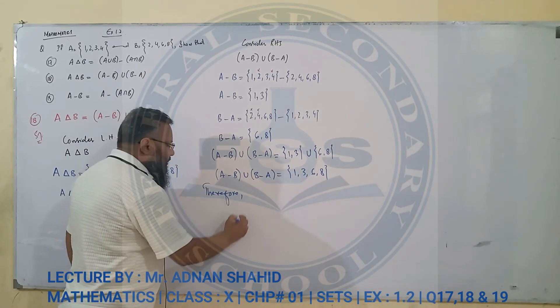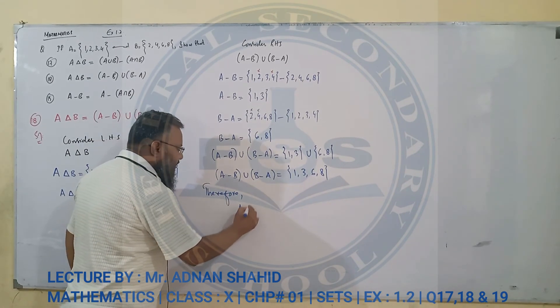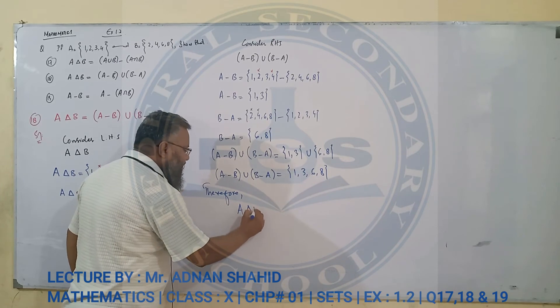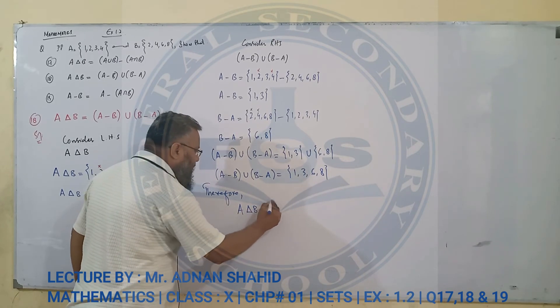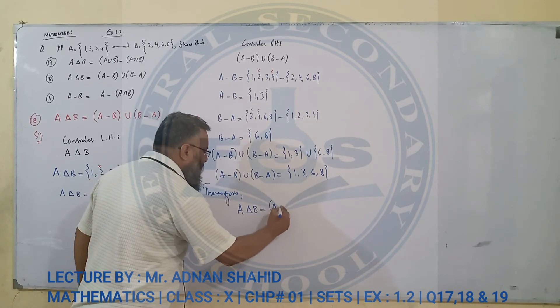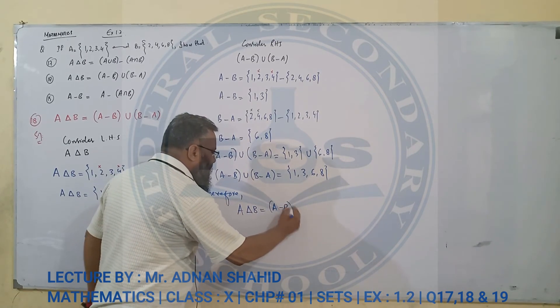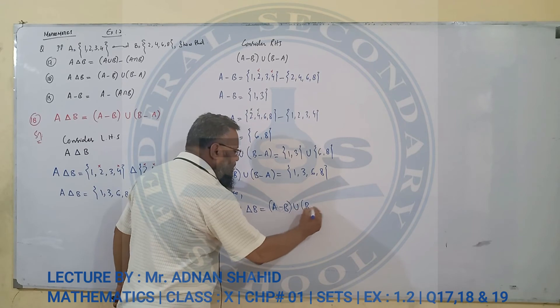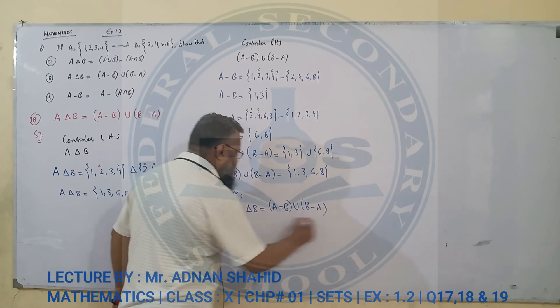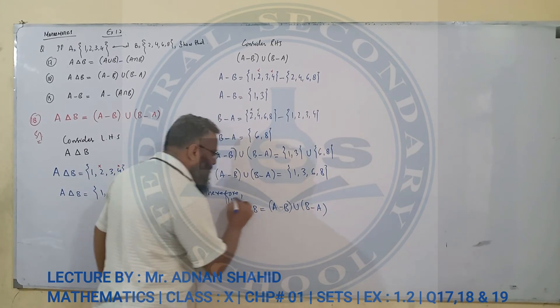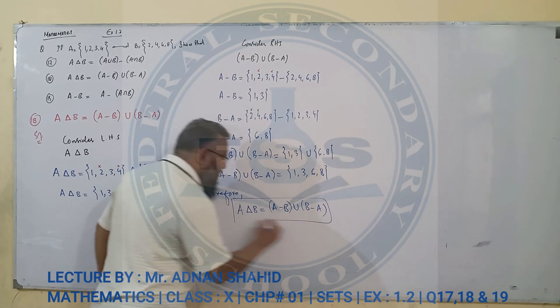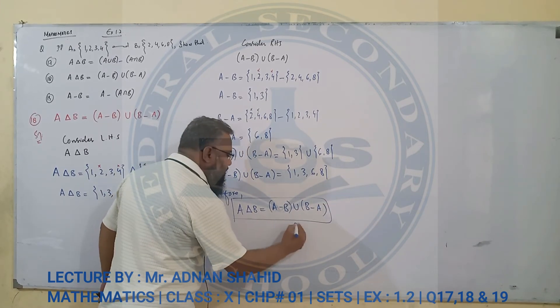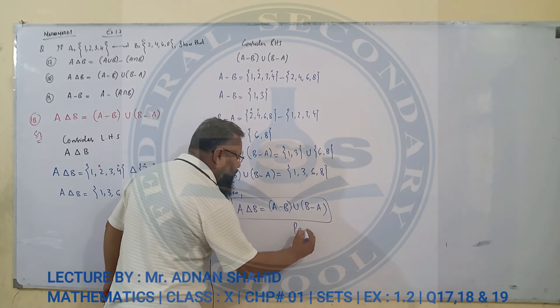चूँकि जवाब बराबर है, therefore A symmetric difference B = A minus B union B minus A — ये साबित कर दिया। नीचे लिख देंगे: Proved.